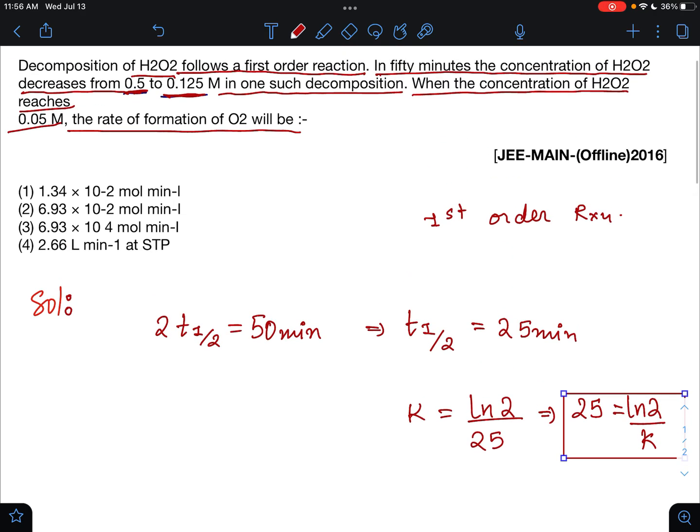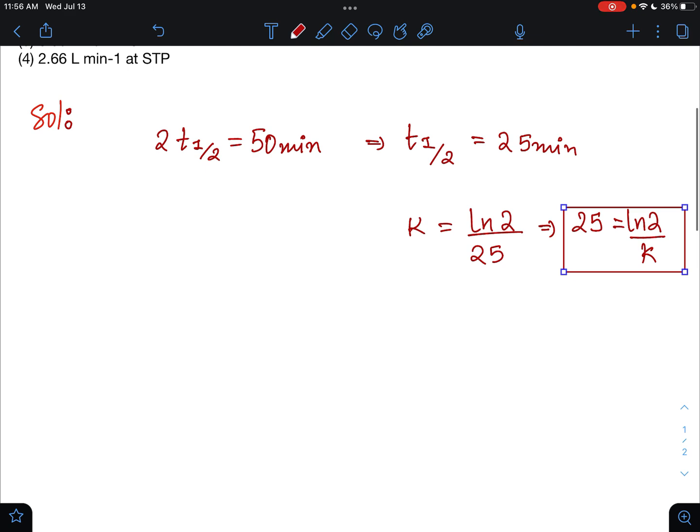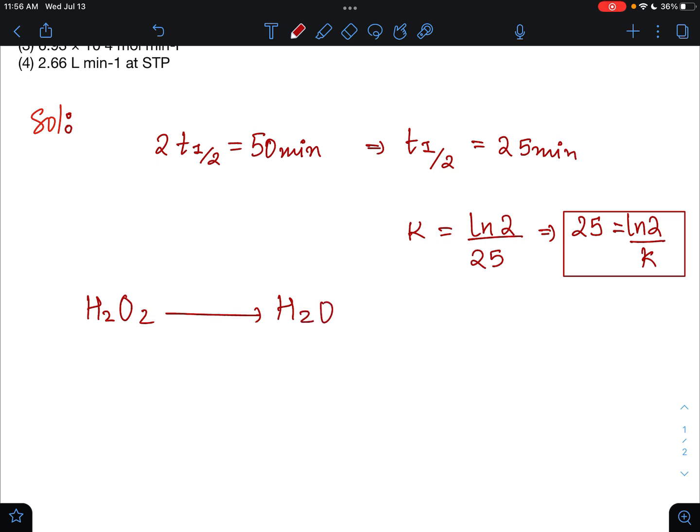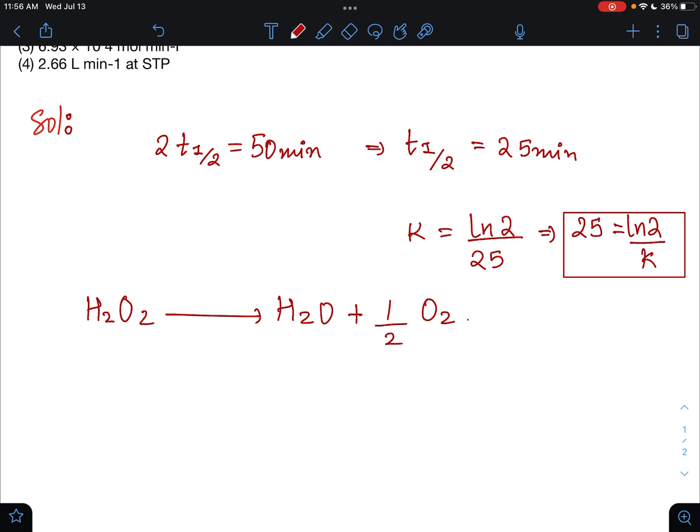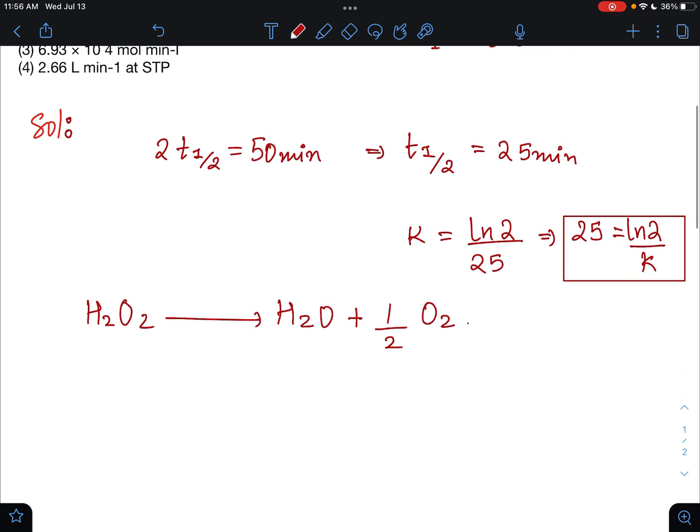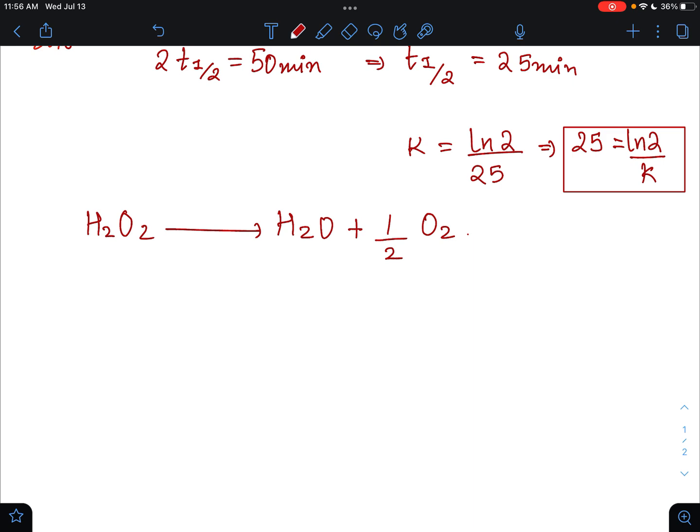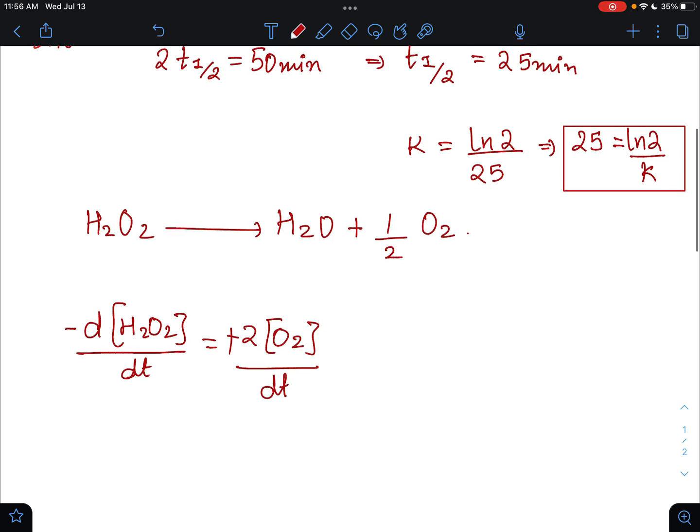When the concentration of H2O2 forms H2O plus half O2, we will get minus d[H2O2] by dt is equal to minus 2 into concentration of O2 upon dt. Sorry, this will be not minus 2, equals to